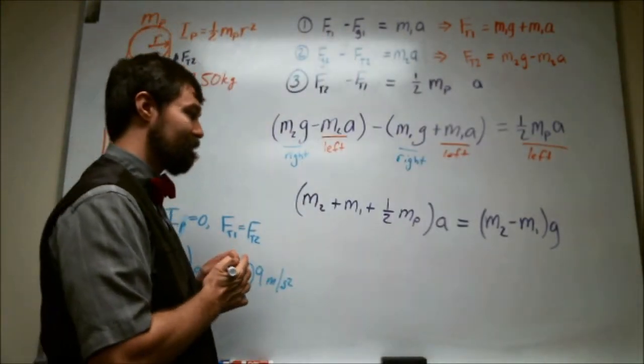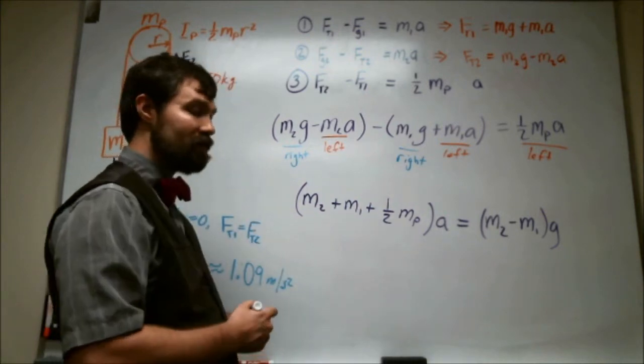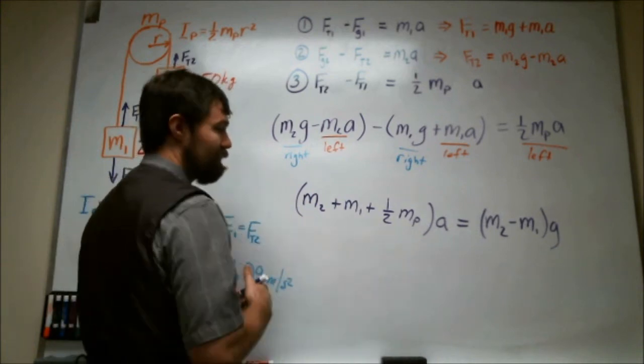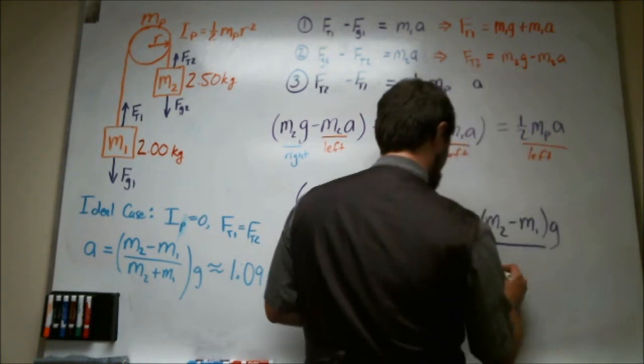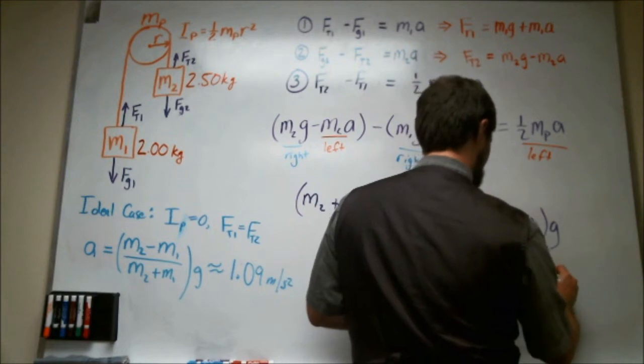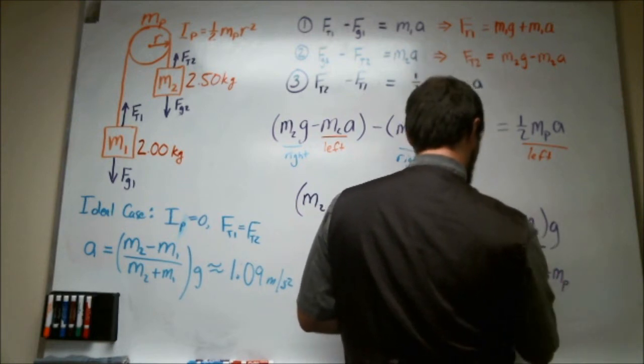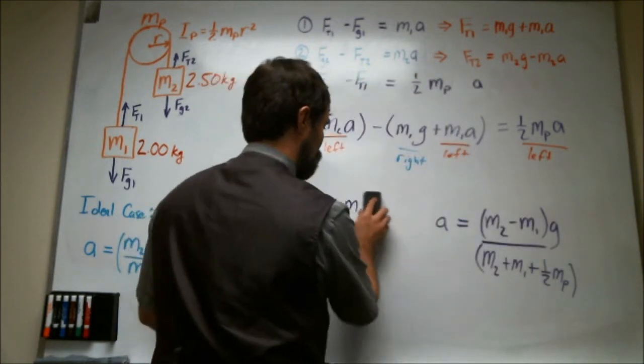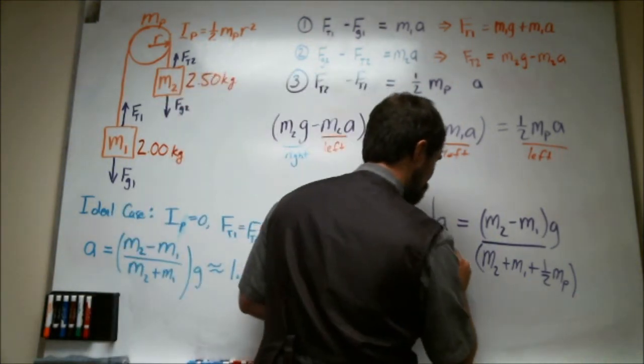Okay, so if I need to solve for this acceleration, I basically need to divide both sides by this term here. So that gives me M2 minus M1 over M2 plus M1 plus one-half Mp times G. So now I've solved for the acceleration of the non-ideal pulley.